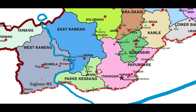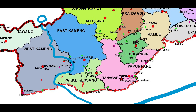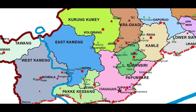In the Pakke Kessang district, we have the famous Pakke Tiger Reserve, or the Pakke Wildlife Sanctuary, from where the famous Pakke river flows and joins the Kameng river. Here also lies the Sessa Orchard Sanctuary. Now we are going to the eastern side.